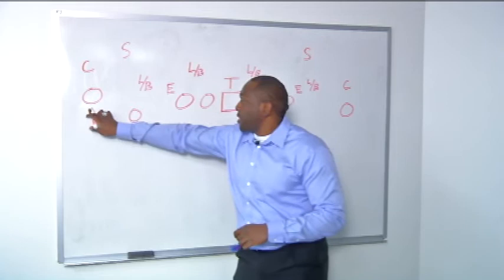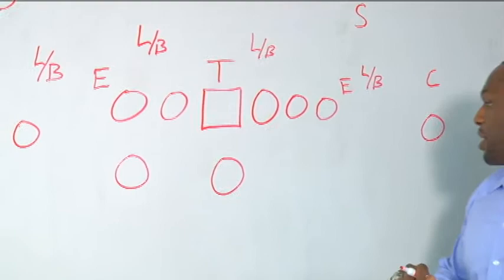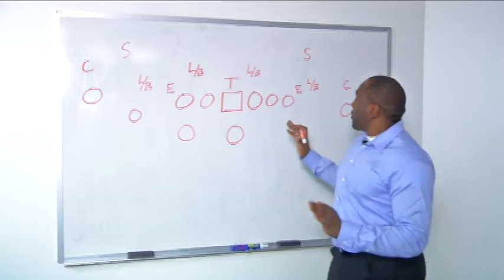That was on a bubble screen to Demaryius Thomas. Demaryius Thomas is over here. Wes Welker is in the slot, right receiver. You have Eric Decker on the edge on the opposite side of the formation. You have Julius Thomas as your tight end, and Knowshon Moreno as your running back here.